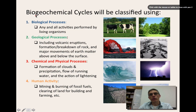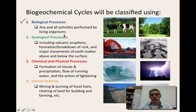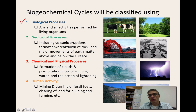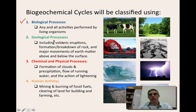Biogeochemical cycles are classified in four different ways. The first one is a biological process, meaning any and all activities performed by any living organisms found on this planet. Over here on the right, we have a picture of cows and many trees. The biological process illustrated here is that the cows are consuming various organic elements within their environment, and the trees are probably photosynthesizing — that is considered a biological process.